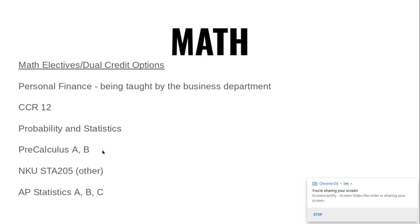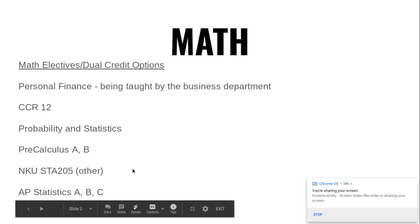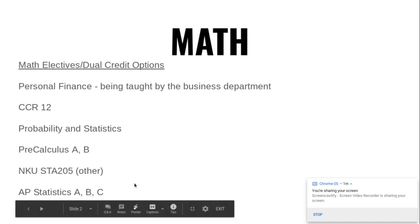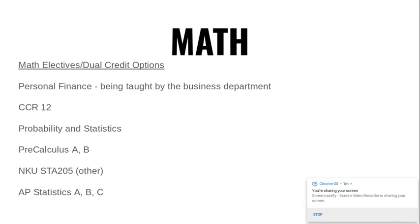You may take pre-calculus AB if you are looking to get into a STEM career field. We also have available the dual credit NKU statistics 205 option, which is taught here on Dixie's campus. And then we also have AP statistics A, B, and C, which is available to you as long as you have taken and passed Algebra 2.